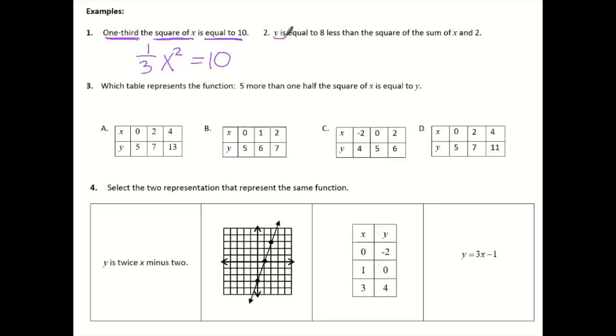Number 2, it says Y is equal to 8 less than the square of the sum of X and 2. So we have a lot in that one. So I'm going to write Y is equal to, it says 8 less than, so I'm going to hang on to that 8 for a second. And then the square of. So with the square of something, I'm going to put the sum of X and 2, and I'm going to put it in parentheses. I have the sum of X and 2. And then I'm going to work backwards this way. So I have the square of that, and then 8 less than it.